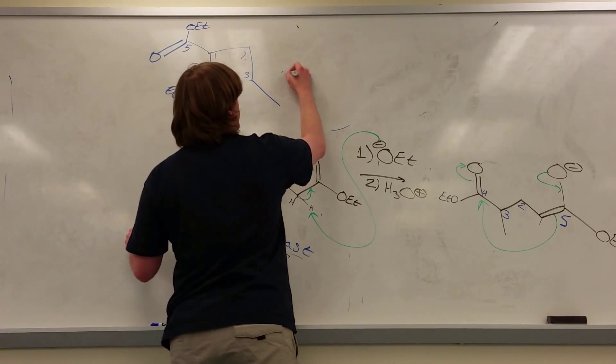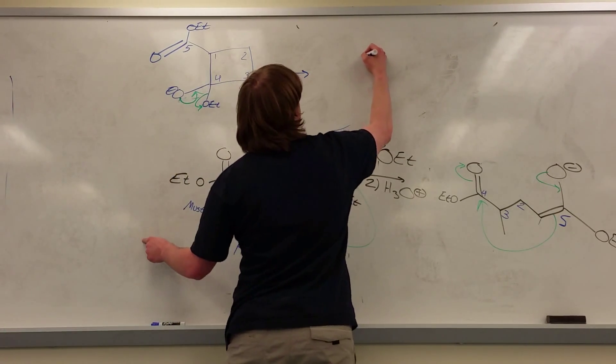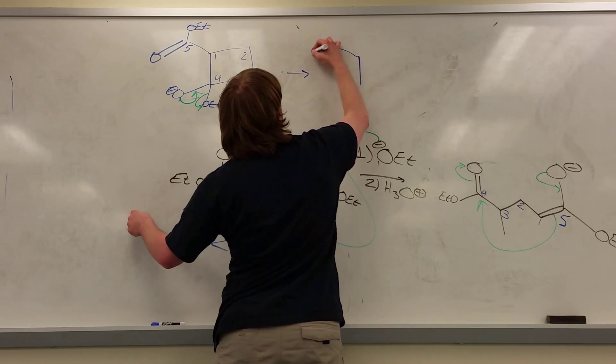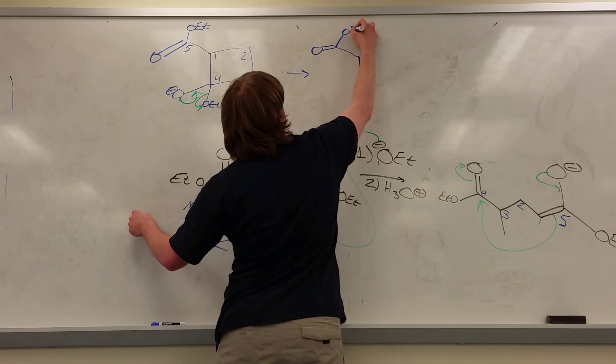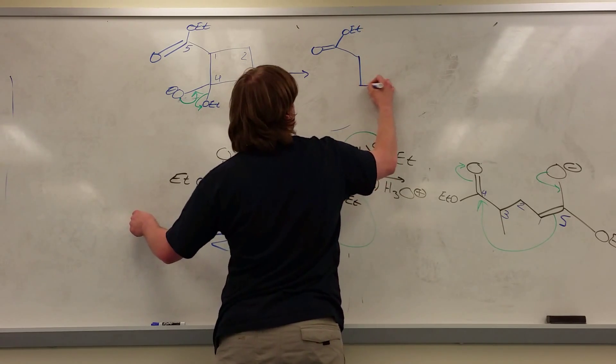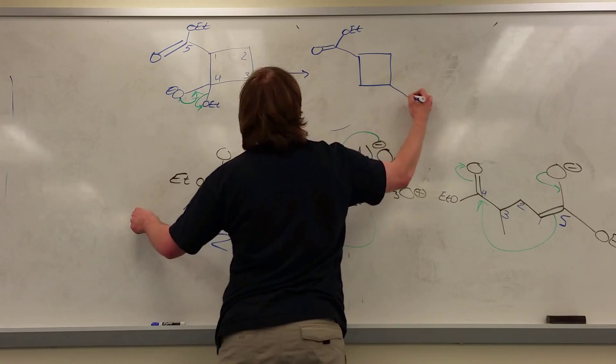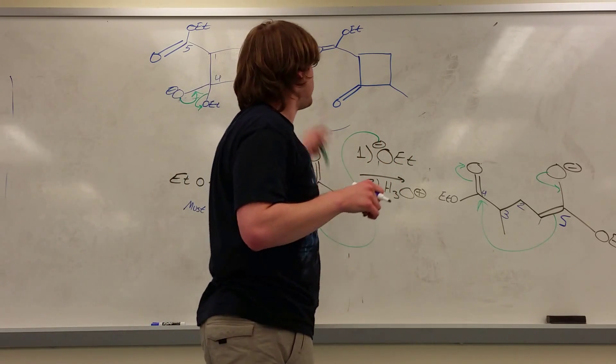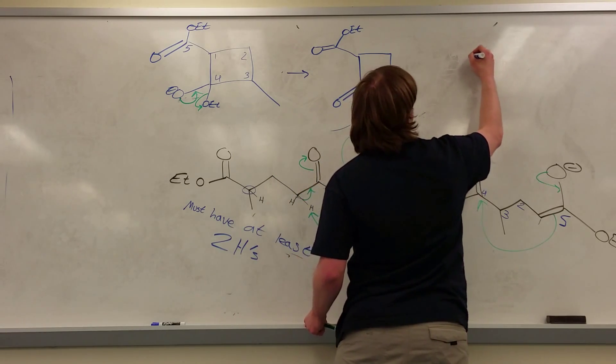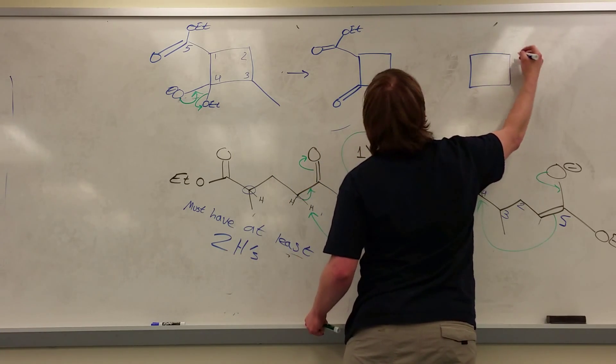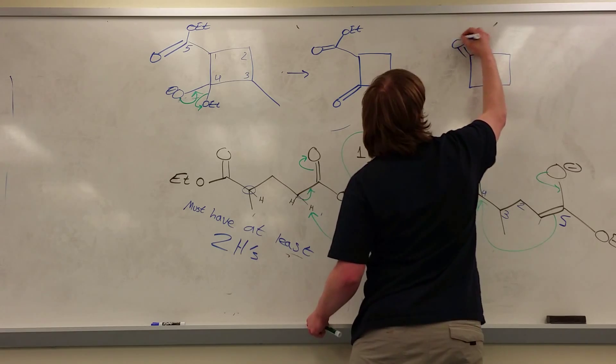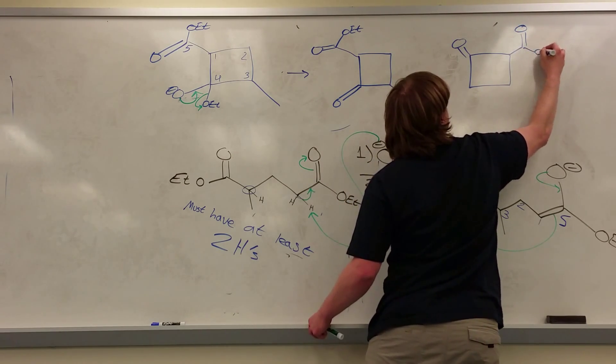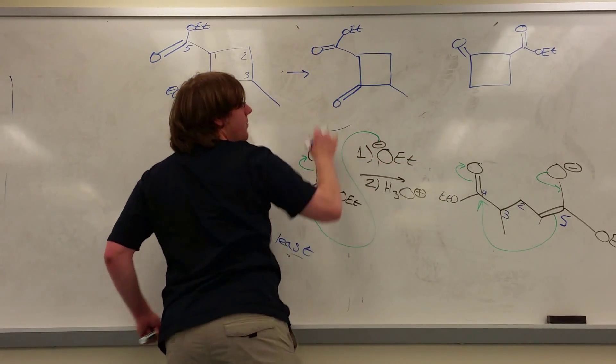And so the result of my Claisen condensation, or sorry, my Claisen reaction, is double-bonded O, OET, my four-membered ring, my methyl, and my double-bonded O. I'm just going to rotate this so we can look at it a bit more easily. Still the same thing, just now I have the double-bonded O there, and this. So I just took this and kind of shifted it like that.